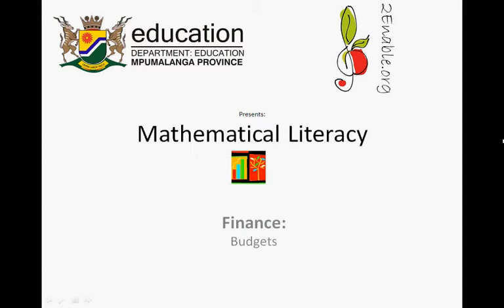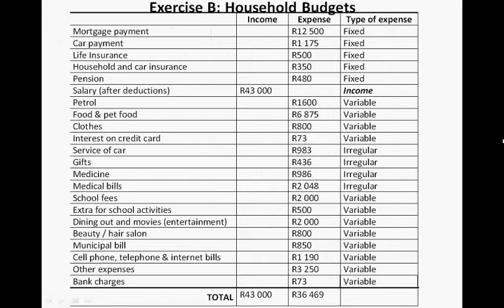This is mathematical literacy finance, the second lesson on budgets — exercise B. We need to say whether expenses are fixed or variable. A mortgage repayment is fixed, car payment is fixed, life insurance is fixed, household and car insurance is fixed, and pension is fixed. Salary deduction is an income. Petrol is a variable cost, food and pet food is variable.